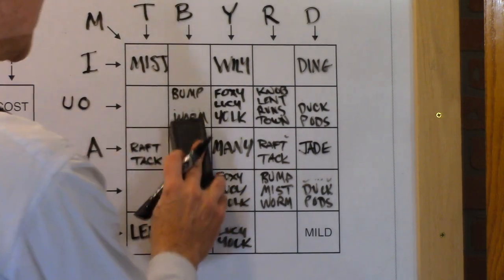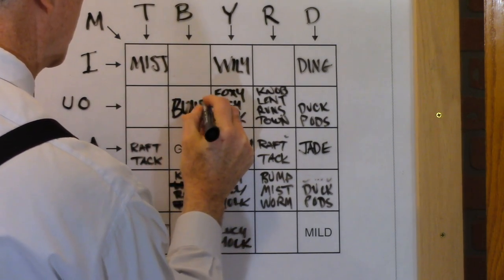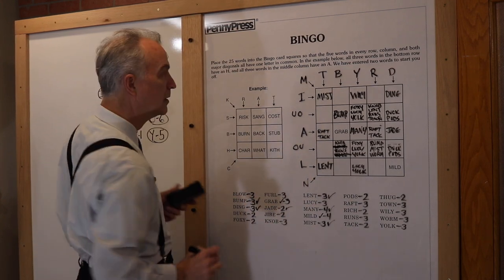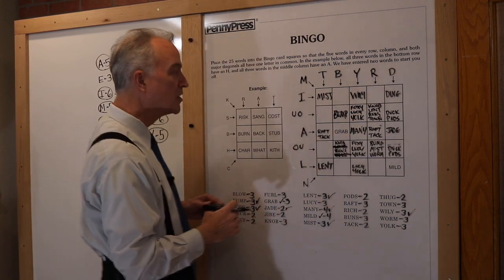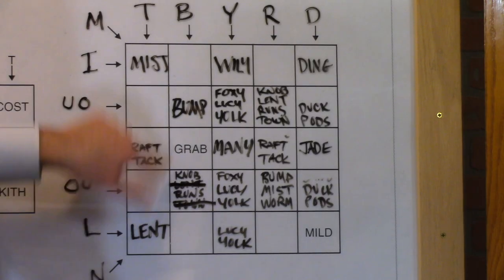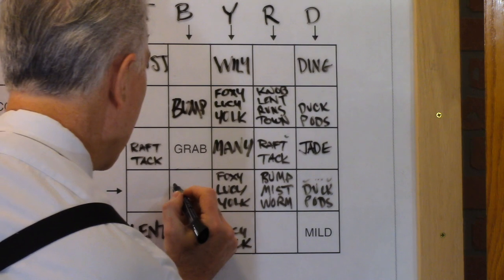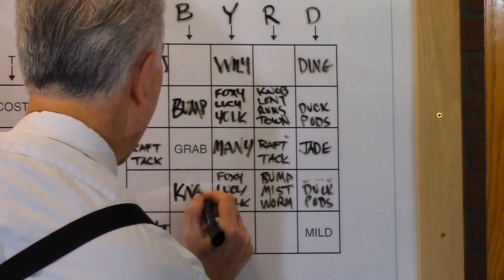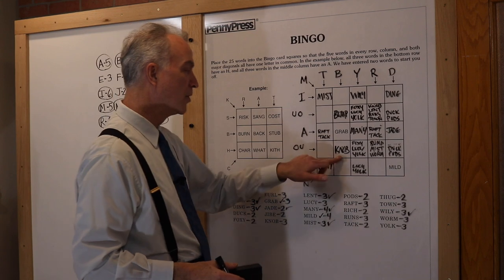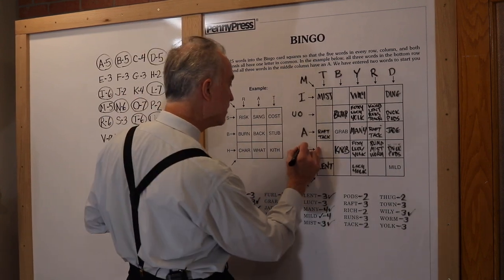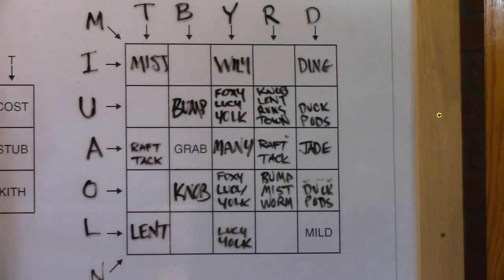Since B is confirmed, worm can no longer be used there — that must be bump. Looking further down: there's no B in runs, so this must be knob. Now, bump has no U and knob has no U — wait: bump has U and knob has no U. Knob has O — so the row with knob is O, and the row with bump is U. We now have all twelve letters placed.